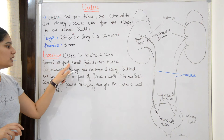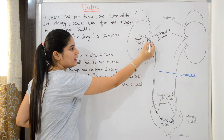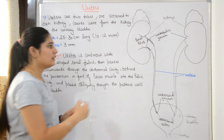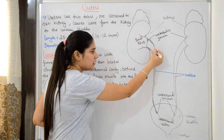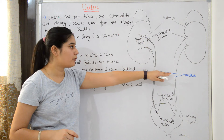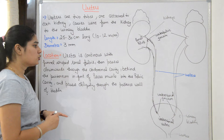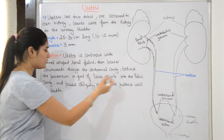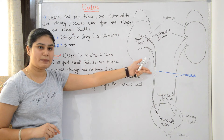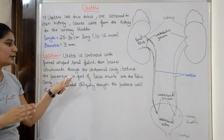In terms of location, the ureter is continuous with the funnel-shaped renal pelvis and passes downward through the abdominal cavity. The upper portion is in the abdominal cavity and the lower portion is in the pelvic cavity. It passes behind the peritoneum, which is why the ureter is described as a retroperitoneal structure.